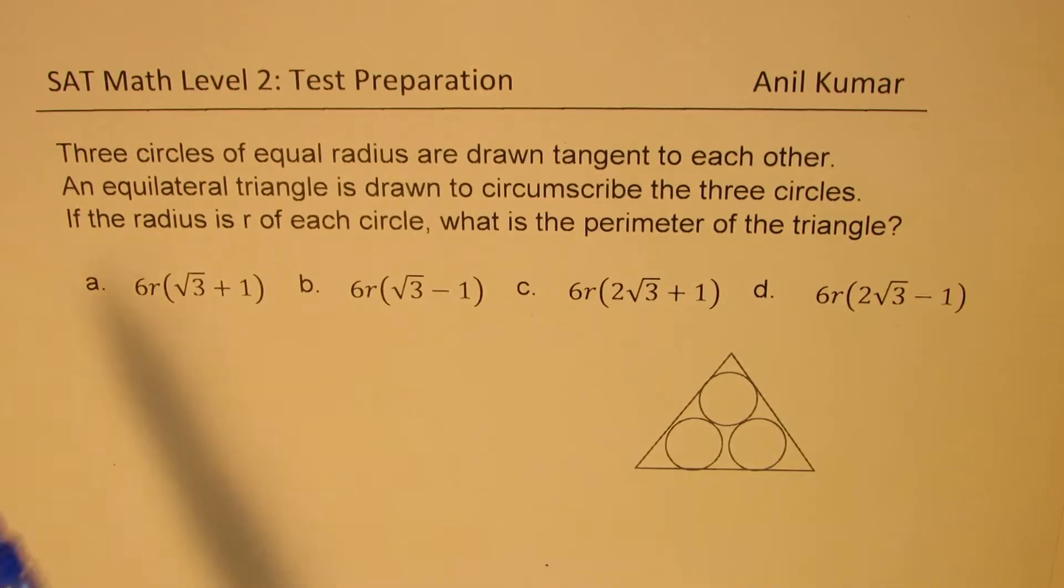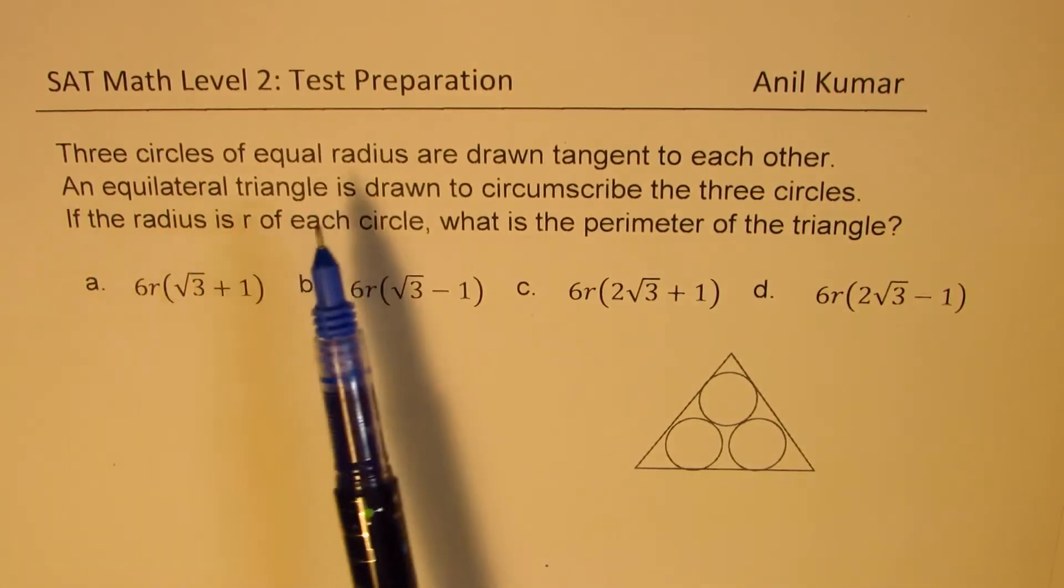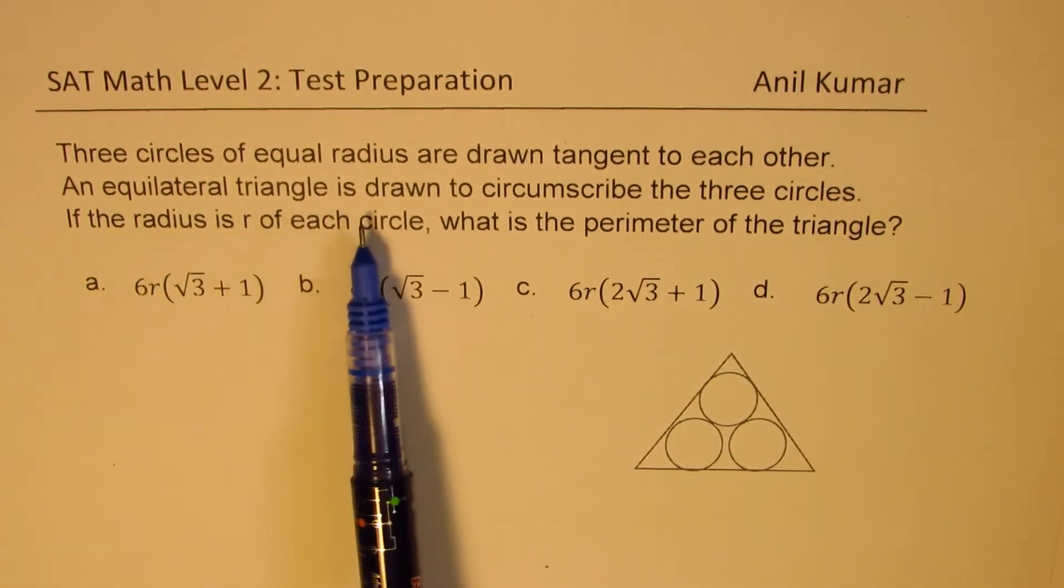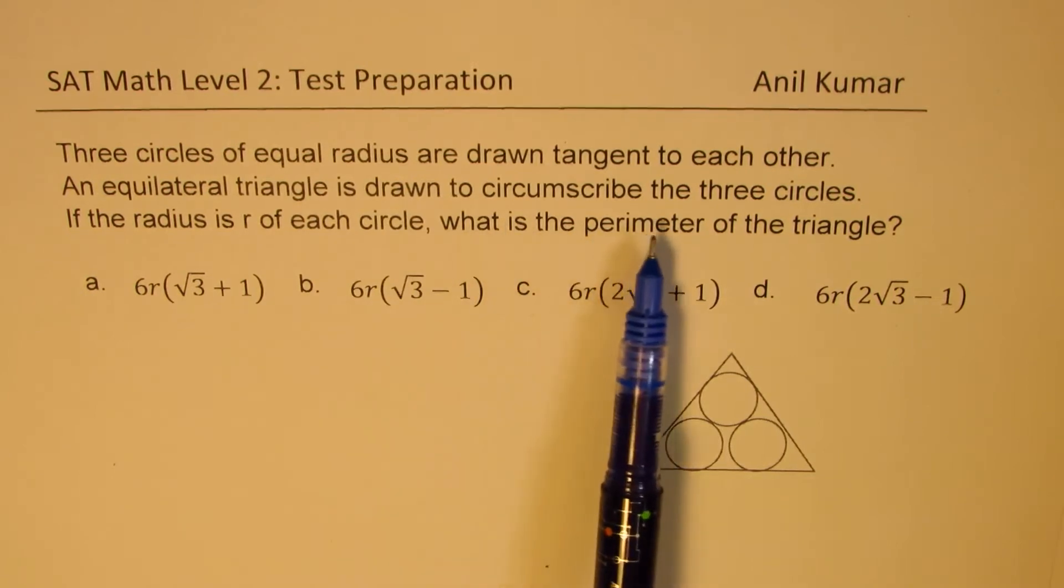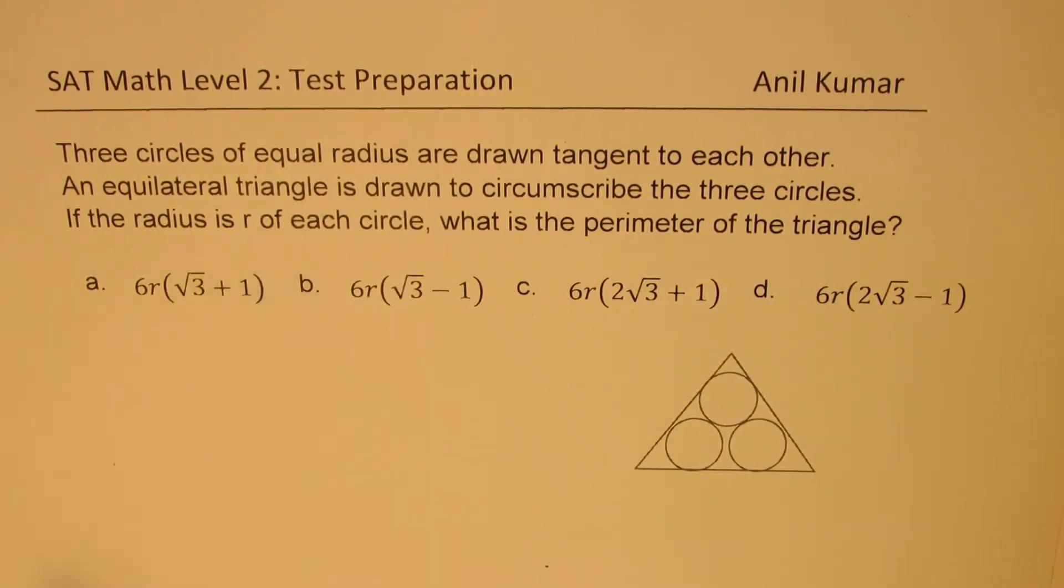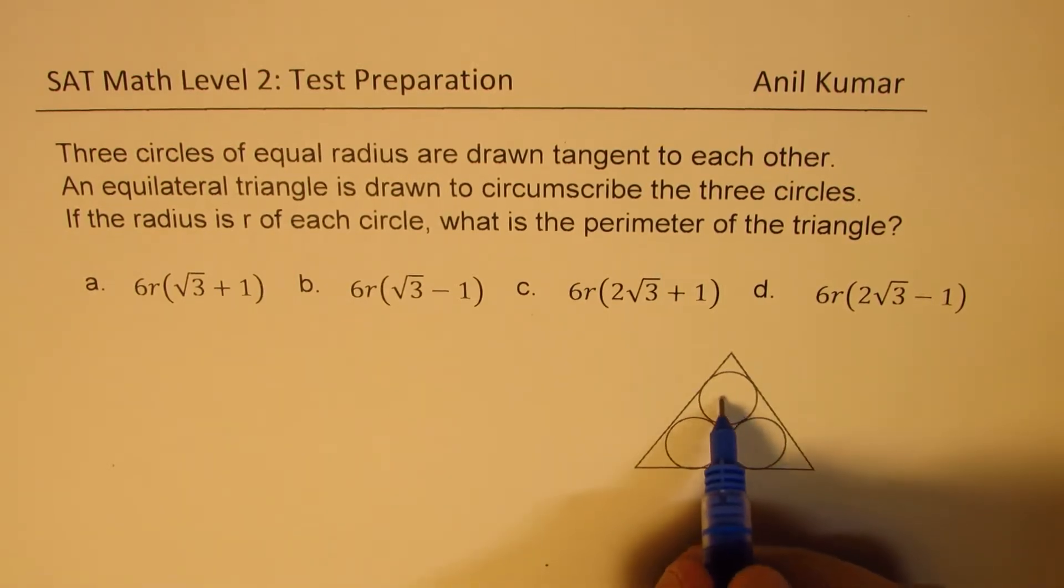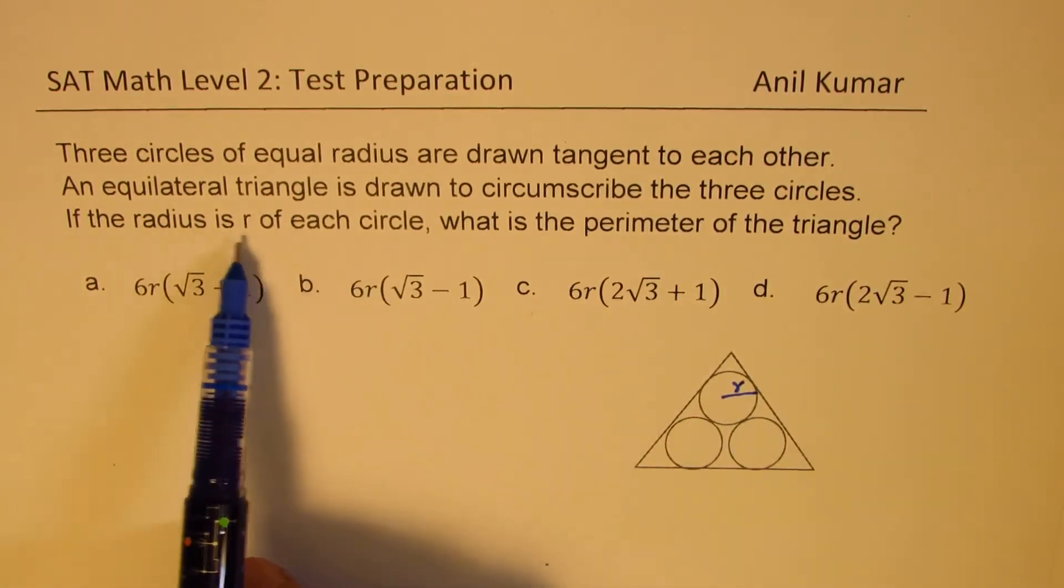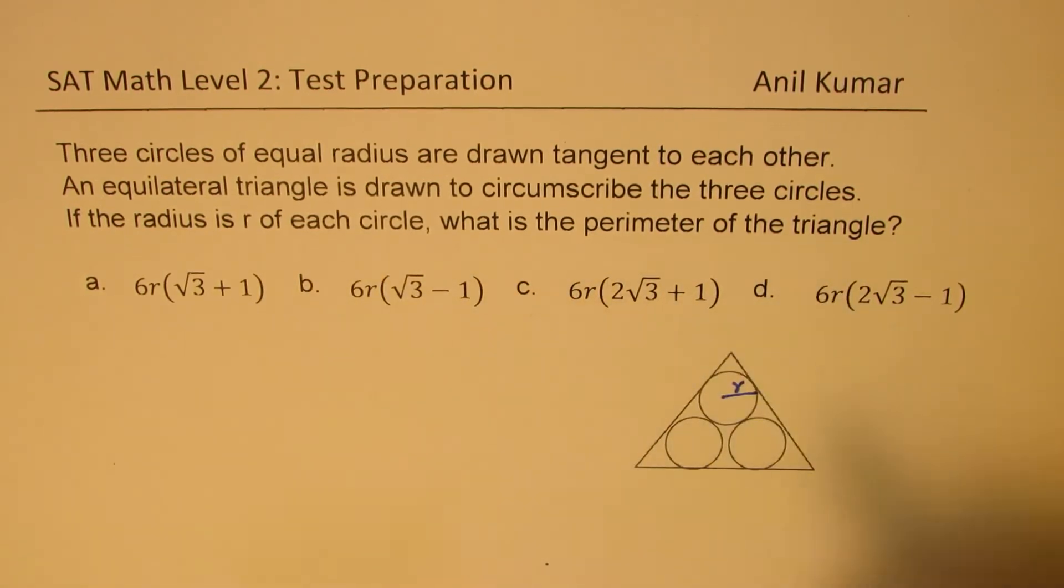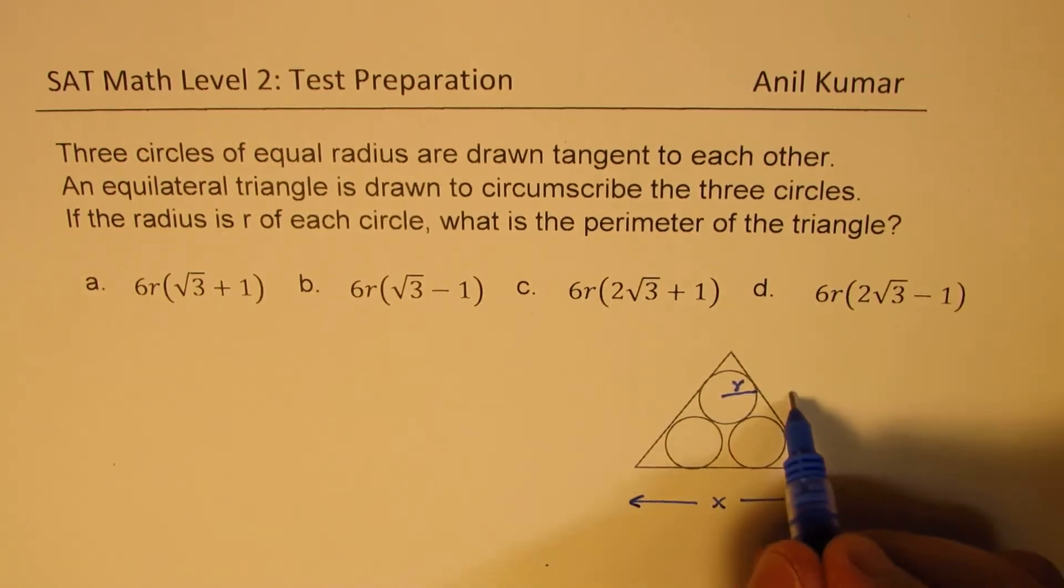The question here is: three circles of equal radius are drawn tangent to each other as shown here in the diagram. An equilateral triangle is drawn to circumscribe the three circles. If the radius is R of each circle, what is the perimeter of the triangle? We need to find the perimeter, that means sum of all these sides. So all sides are X.